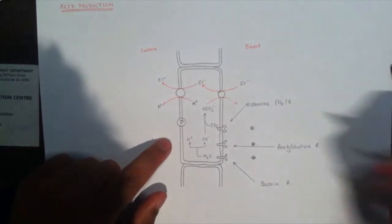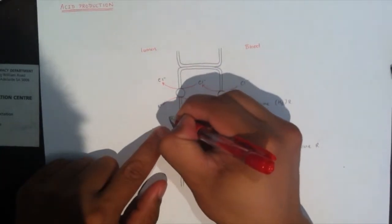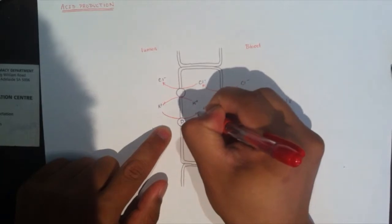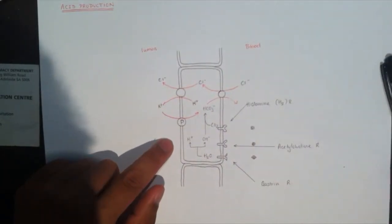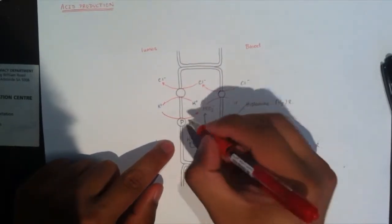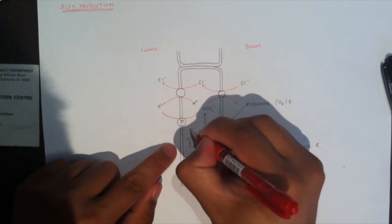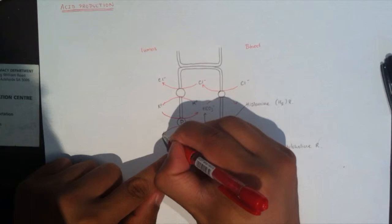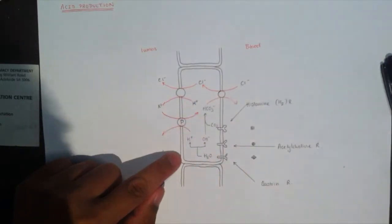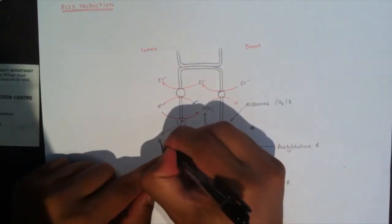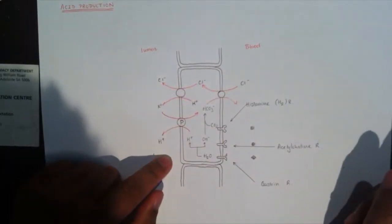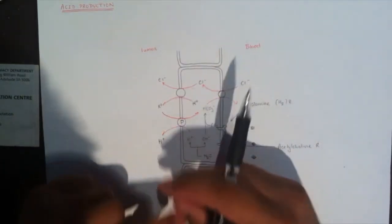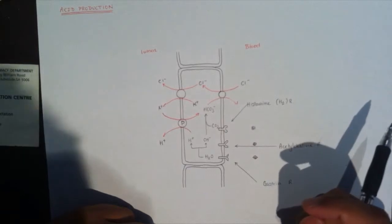Potassium is then transported back into the cell. The proton pump is an antiporter — when potassium goes in, hydrogen comes out. The chloride and the hydrogen then combine to form hydrochloric acid.